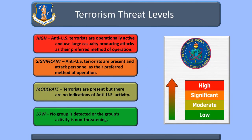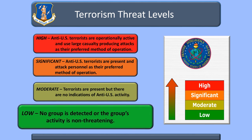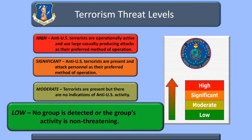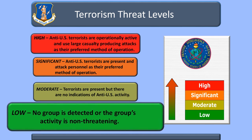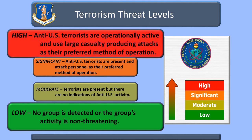The DOD considers a terrorist group's operational capability, current activities, intentions, and operating environment when determining terrorism threat levels. The levels range from low, where there is either no group or the activity is non-threatening, to high, where terrorist groups are active in conducting attacks.